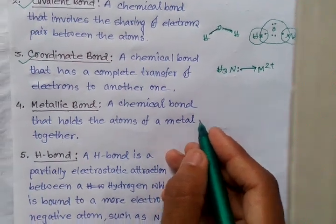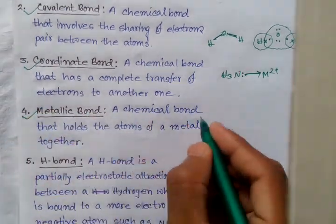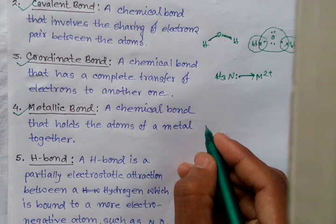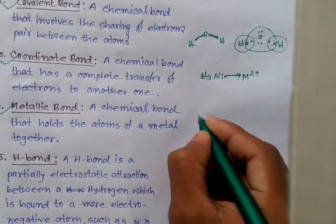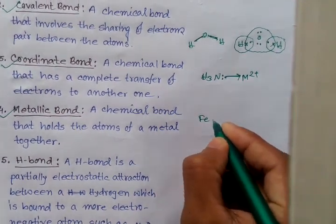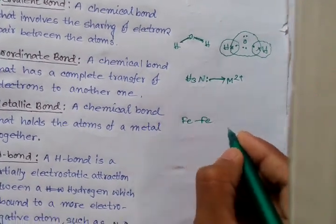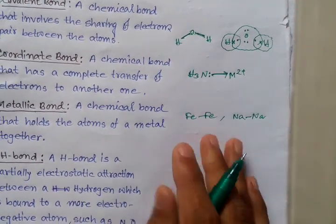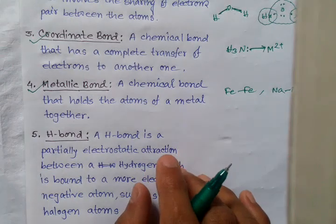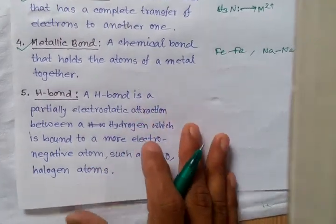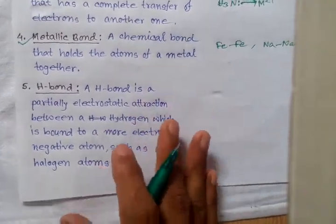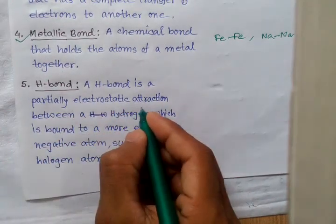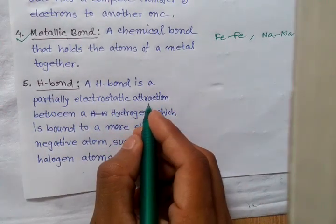There is also the metallic bond: a chemical bond that holds the atoms of a metal together — for example, iron and sodium. These are metallic bonds. The last type is the hydrogen bond: a hydrogen bond is a partially electrostatic attraction.